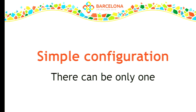In Drupal 8, there are two types of configuration. There's simple configuration, which basically means there can be only one instance of that. A classic example is your site name — there is only one site name. We have a configuration object called system.site, and in there there's a configuration key called name, and that has a value, and that is your site name.